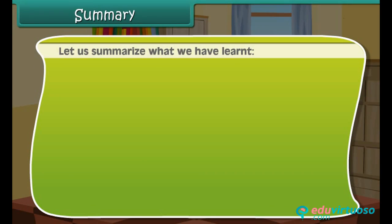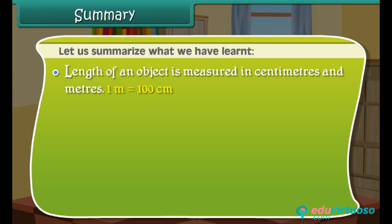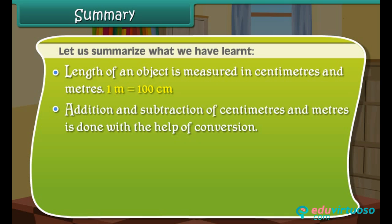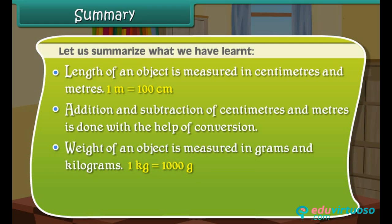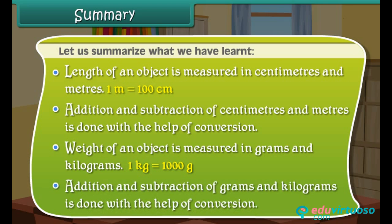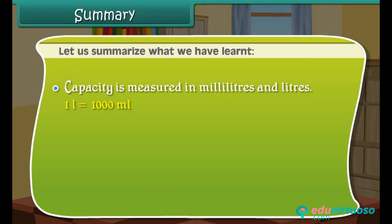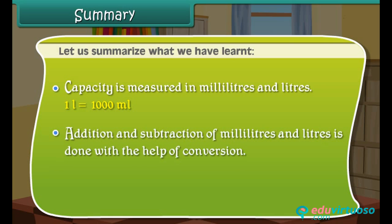Let us summarize what we have learned. Length of an object is measured in centimeters and meters; 1 meter equals 100 centimeters. Addition and subtraction of centimeters and meters is done with the help of conversion. Weight is measured in grams and kilograms; 1 kg equals 1000 grams. Capacity is measured in milliliters and liters. Addition and subtraction of all these units is done with the help of conversion.